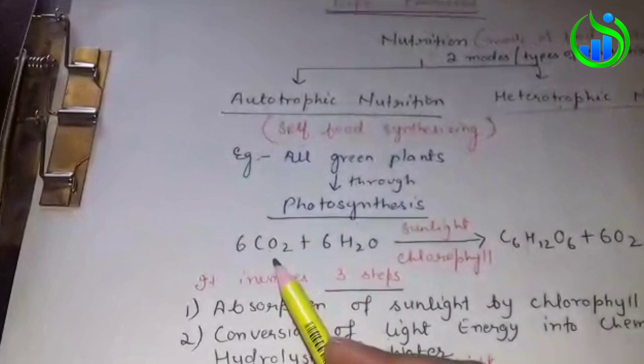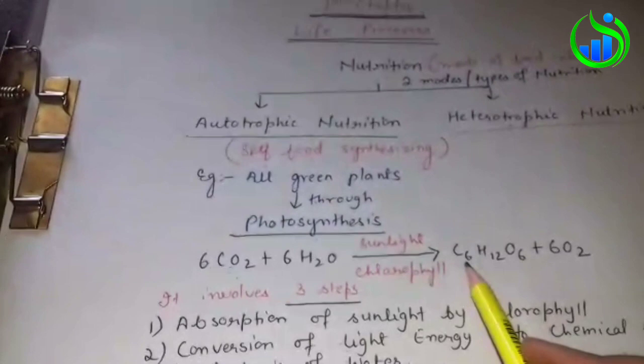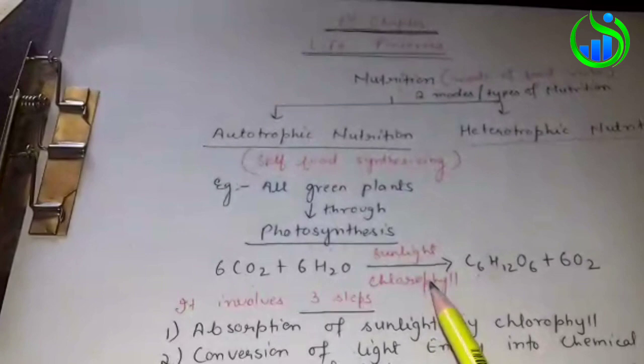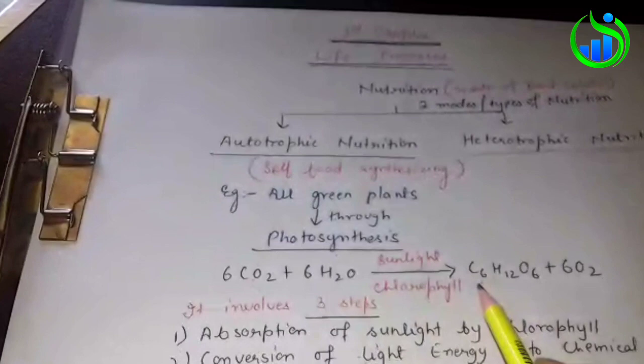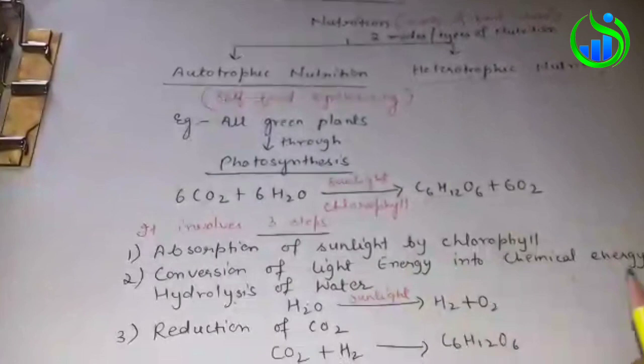They convert inorganic compounds into organic food by using sunlight and chlorophyll, producing organic food like glucose. These reactions are complete in steps. The first step is absorption of sunlight by chlorophyll in leaves.